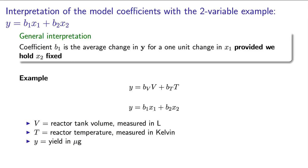When using the data, we might find that that slope coefficient bv is negative, indicating that for higher tank volumes we obtain a lower yield. The bt coefficient, the temperature effect, might be positive, indicating that at higher temperatures we achieve a higher yield. So we've learned something about our process from that model.